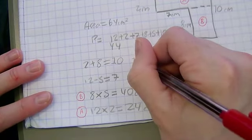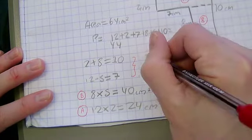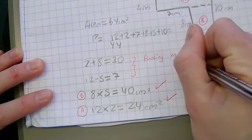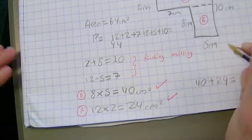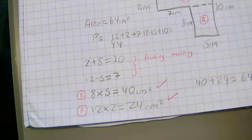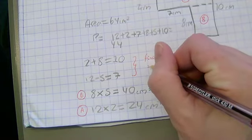What I would also do by here is I'd say finding missing sides. OK? So this is what we call quality of written communication, OK? And basically by having really good quality of written communication, it lets anyone who's marking your work follow what you're doing. Finding missing sides.